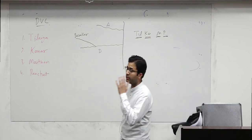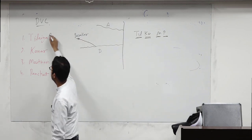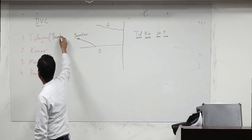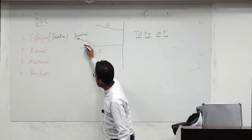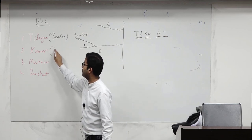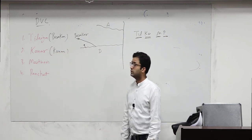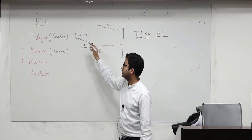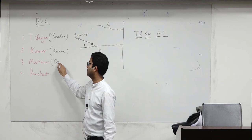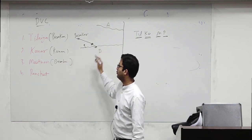What is important here? Out of this Tilaiya is on Barakar River. Here we have Konar, which is on Konar River itself, Chhoti Nagpur River, Konar. Then third one is Methon, it is also on Barakar River. Then we have Panchet, that is on Damodhar River.